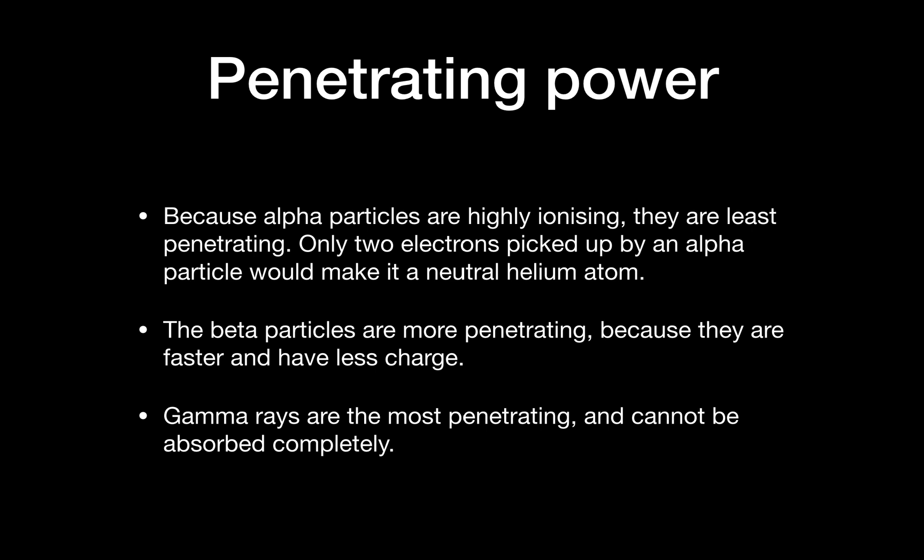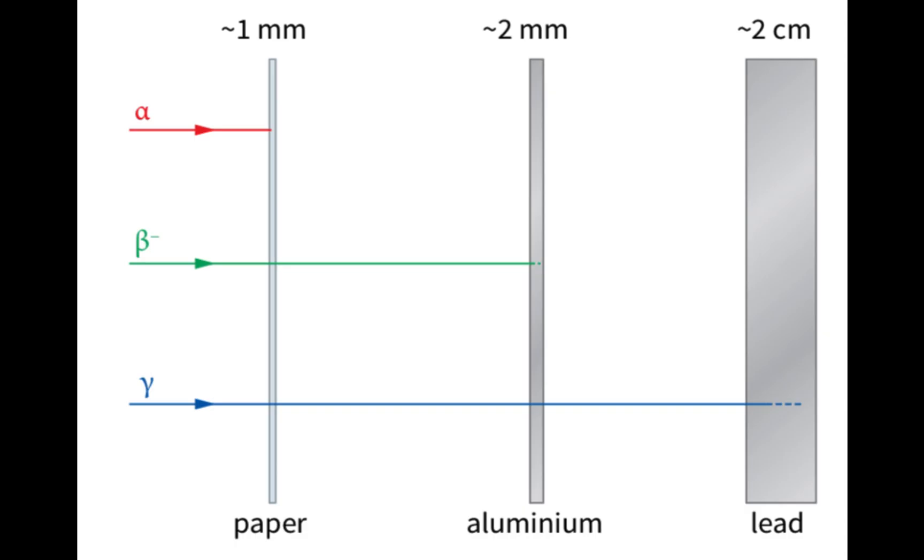Because alpha particles are very highly charged and highly ionizing, they will lose their charge very soon as they absorb two electrons from the air and they will be stopped because now they're essentially neutral. Beta particles are more penetrating because they are faster and have less charge, hence they're less ionizing. Gamma rays are the most penetrating and cannot be absorbed completely. It is hypothesized that an infinite length of lead would be needed to completely absorb all gamma rays. Some thickness of lead will reduce the gamma ray to half its intensity.